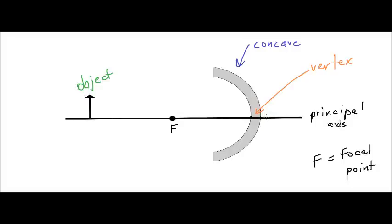So a couple of really important points: we've got our principal axis, our focal point, our object, and our vertex. The principal axis is this imaginary line drawn through the vertex, representing the surface on which our object lies, extending toward the concave mirror. We are going to draw two rays, and I'll show them using different colors.